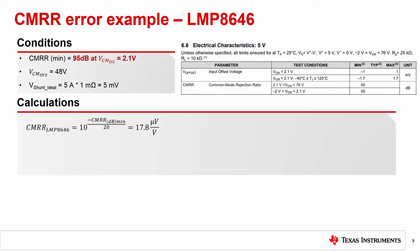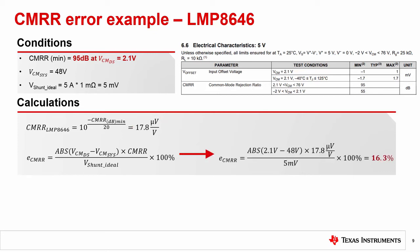Based upon the V-offset specification, there is only additional error from CMRR for common modes not equal to 2.1 volts. The ideal shunt voltage is equal to our load current times our shunt resistor, which results in 5 millivolts. Using our offset error equation from before, we calculate a whopping 16.3%.